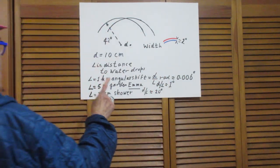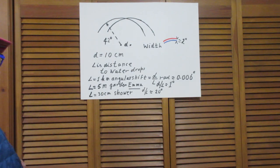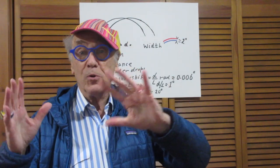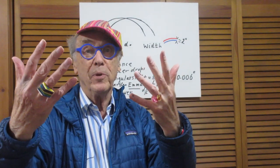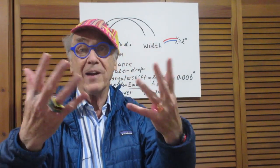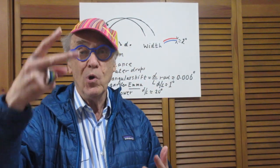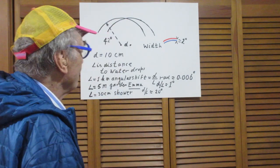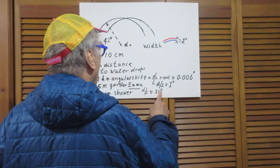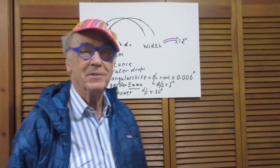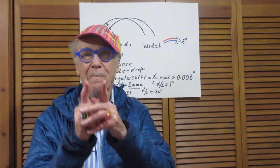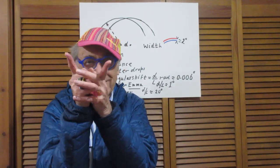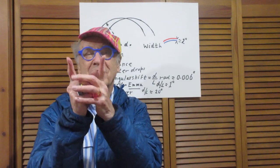Now I go to the shower. And there the water was perhaps 30 centimeters away from me. And it was there, in that water, that I saw two primary bows. So now d over L is 20 degrees. So the two were completely separated, unmistakable.